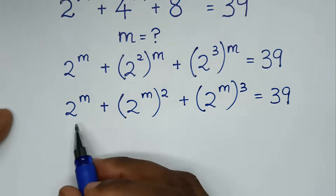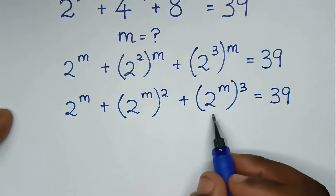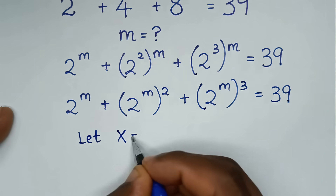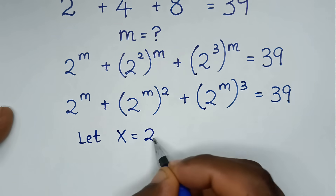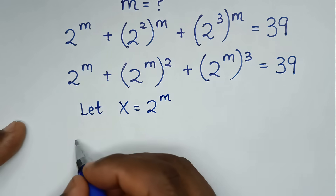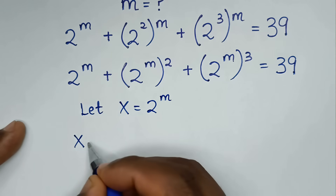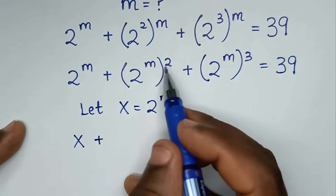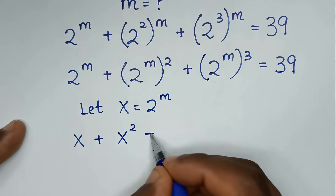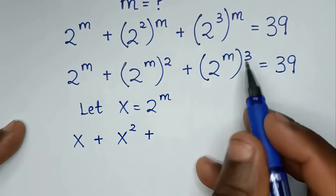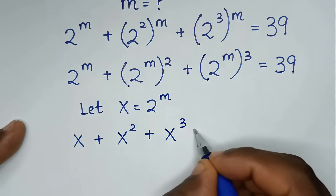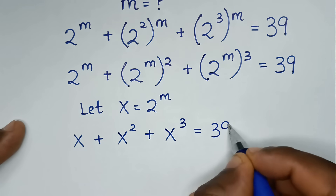Now, 2 power of m is common. So we will let x equal to 2 power of m. So our equation will be x, then plus x squared, then plus x power of 3, is equal to 39.